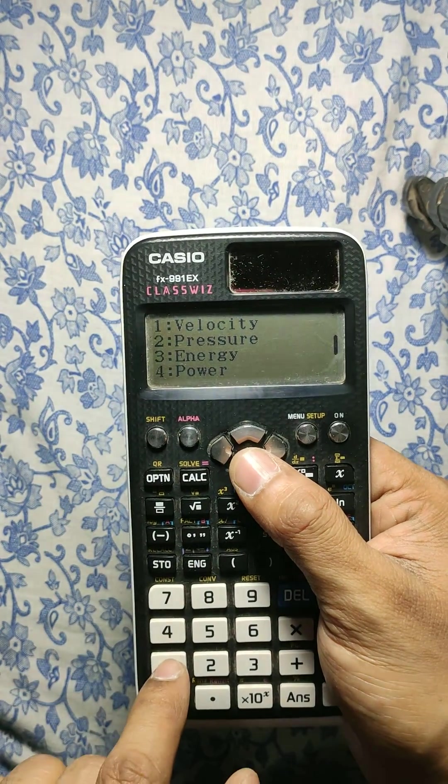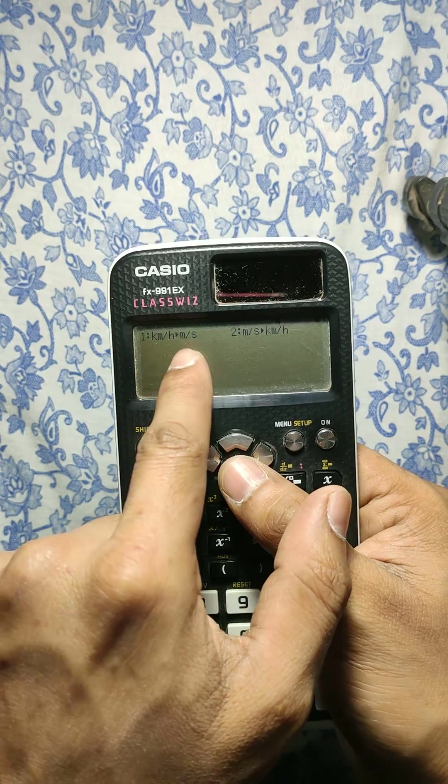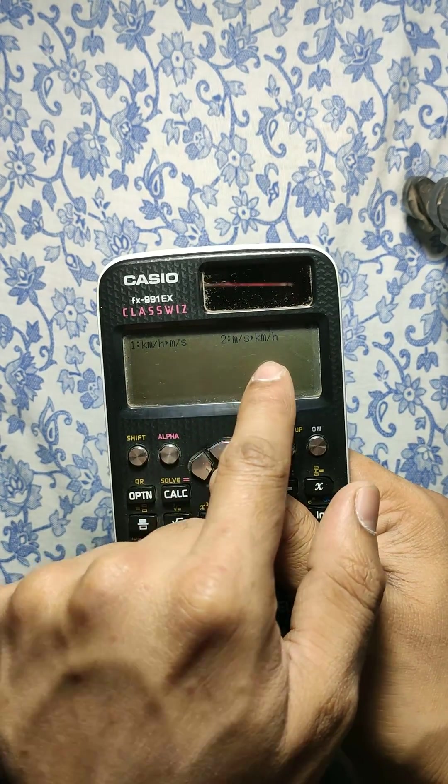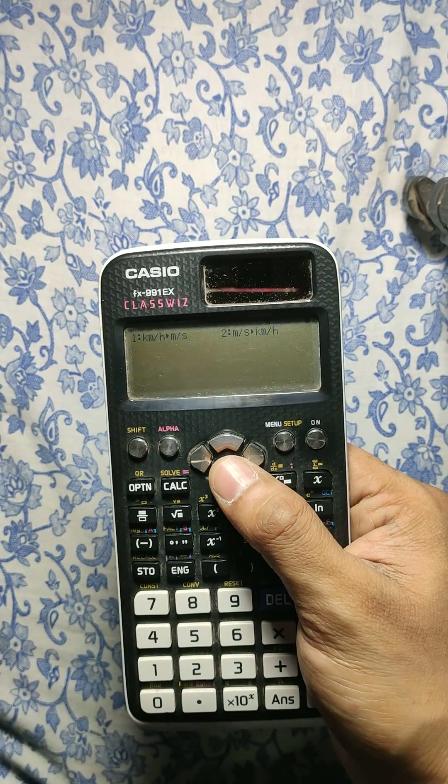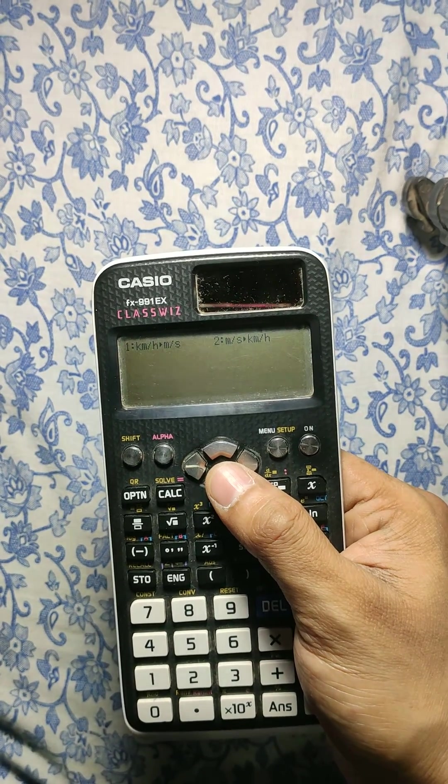Here is velocity, and then you are only given kilometer per hour to meter per second and meter per second to kilometer per hour. If they would have given miles per hour to kilometer per hour, it would have been very useful for us.